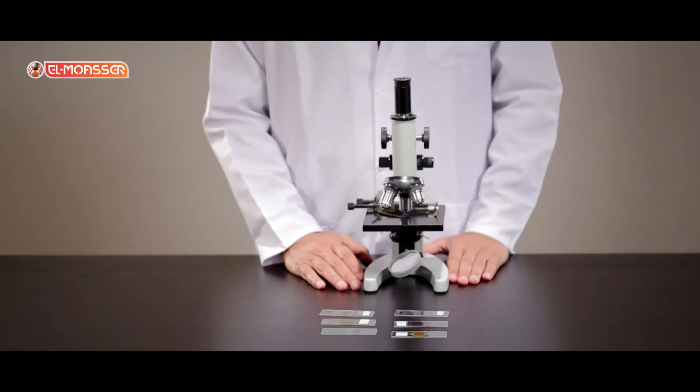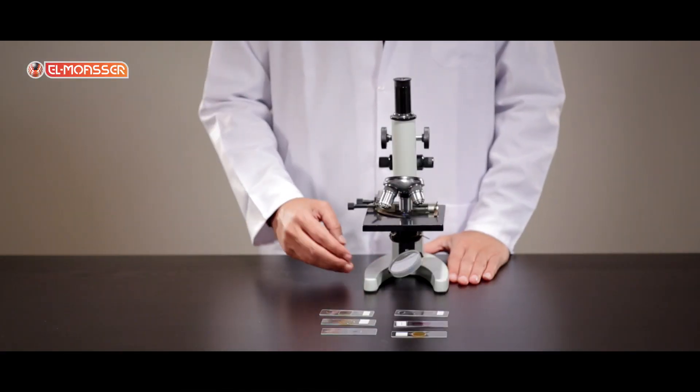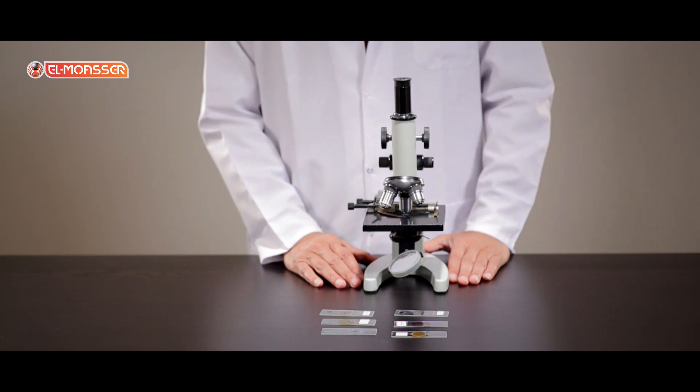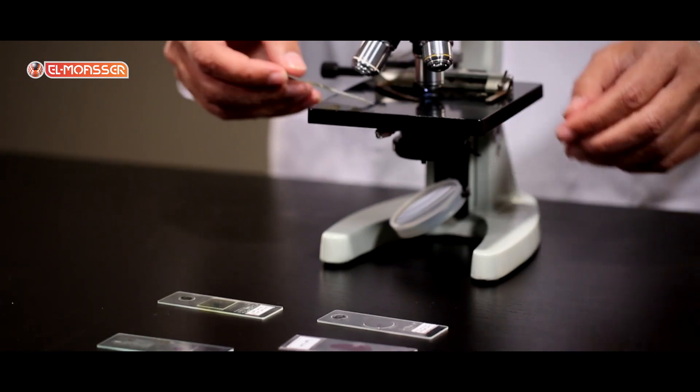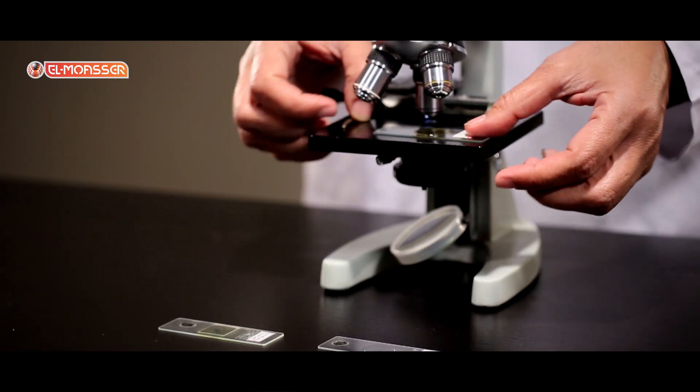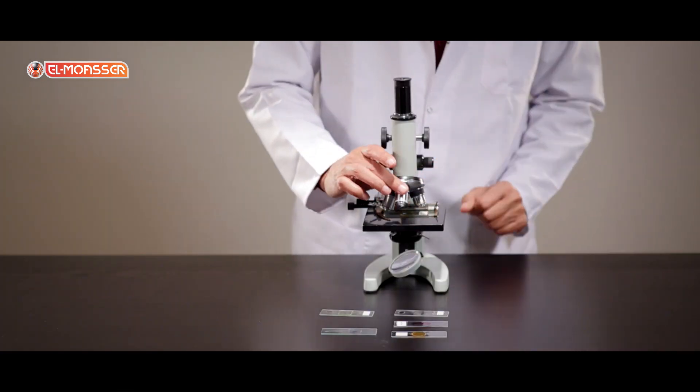Procedure: examine each slide to recognize the name of the tissue and its type, then describe it. Place the first slide on the stage and use the low-power objective lens.